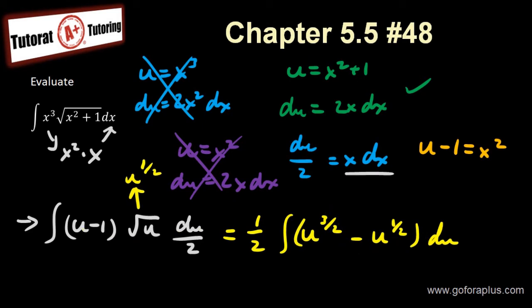Now this is very easy to evaluate, right? So I have 1 half, open bracket, u to the 5 over 2 over 5 over 2, minus u to the 3 half over 3 half, close the bracket, plus c, right?